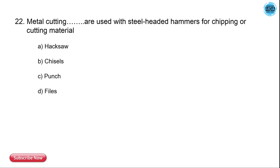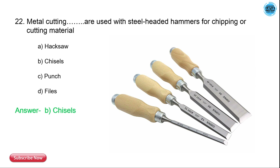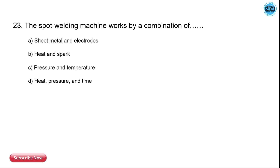The 21st question is: metal cutting blanks are used with the steel-headed hammer for shaping or cutting operations. Which tool is it? The options are hex, chisel, punch, and file. The correct answer is chisel — metal cutting chisels are used with a steel-headed hammer for chipping or cutting material.